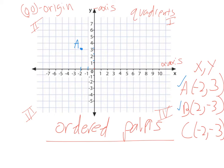So B would be 2 and then negative 3. So positive 2, 1, 2, and then negative 3, 1, 2, 3. And that's going to be B.